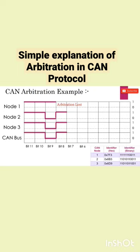At bit 7, node 2 is sending a dominant bit and node 3 is sending a recessive bit. This clearly means that node 3 has lost the arbitration and stops sending further bits.